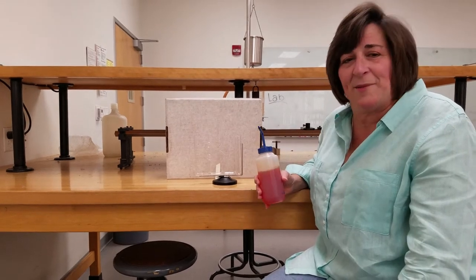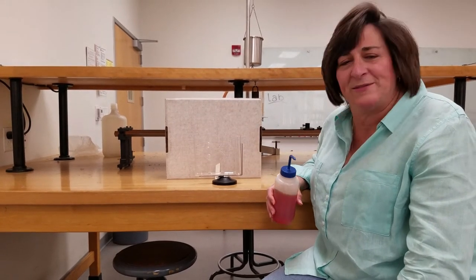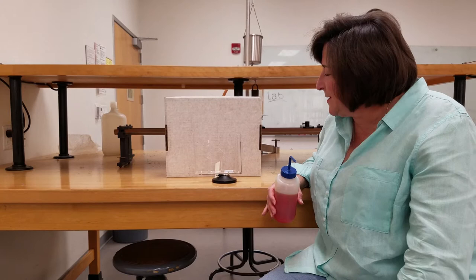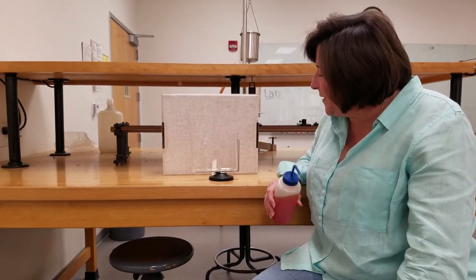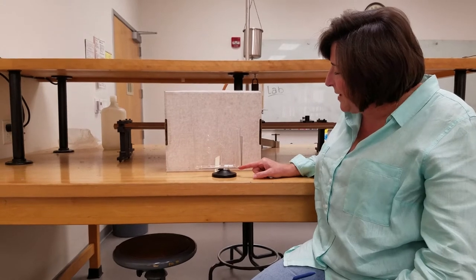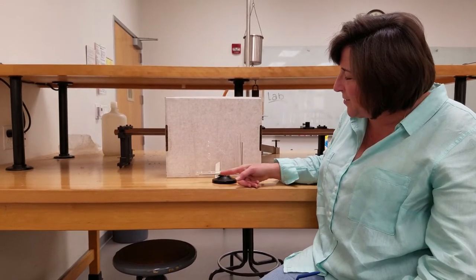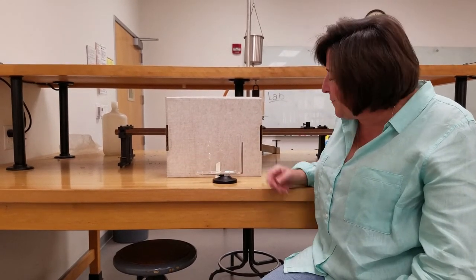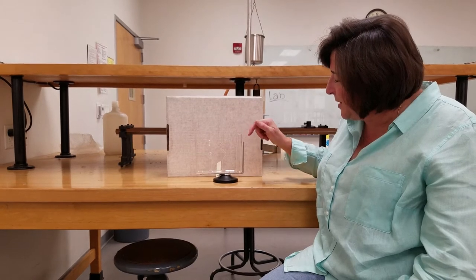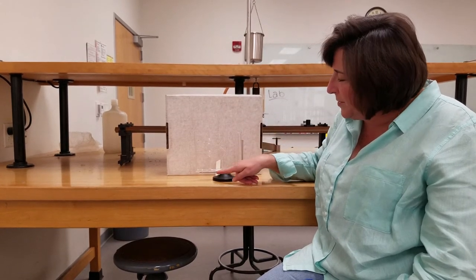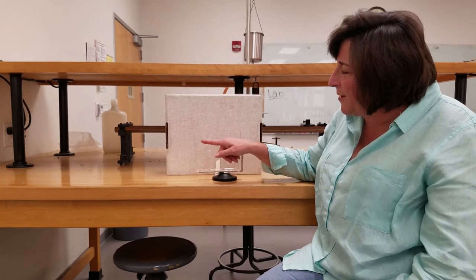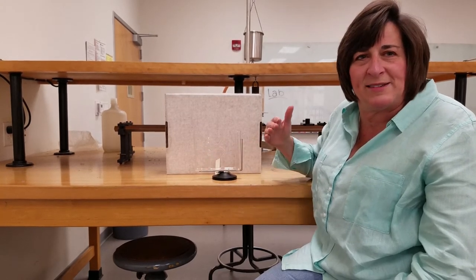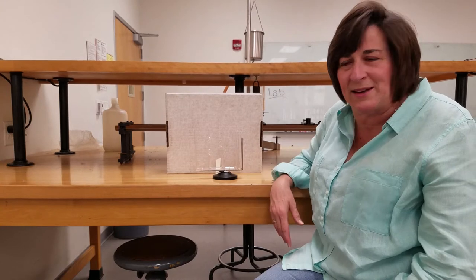So this demo is called Pascal's Vases, after a famous physicist named Pascal. What we have here is one, two, three, four glass vases, and they're all open at the bottom and connected to this horizontal glass tube. So if I pour liquid into one tube, it can run down to the tube, run across horizontally, and then start filling, moving upward, filling up the vases and raising the height of the liquid in each of the vases.